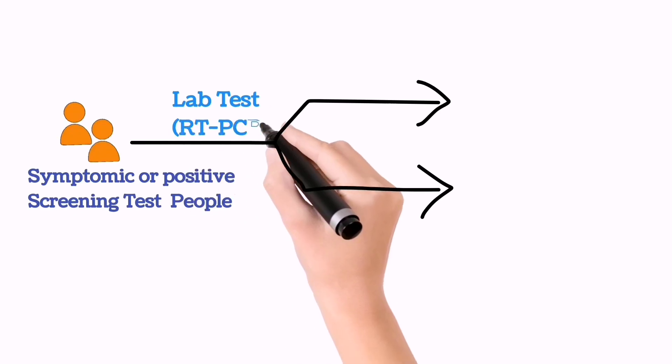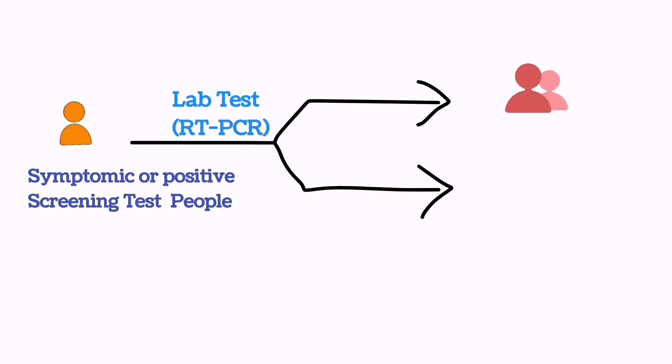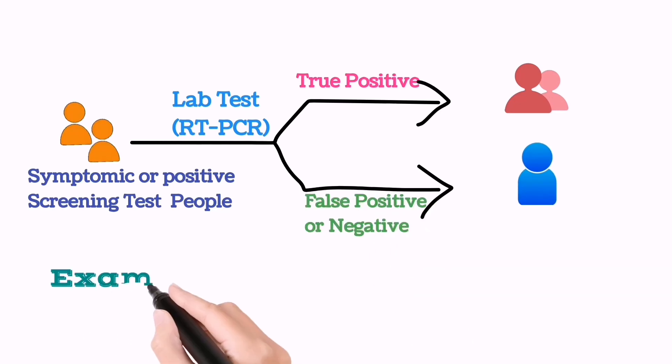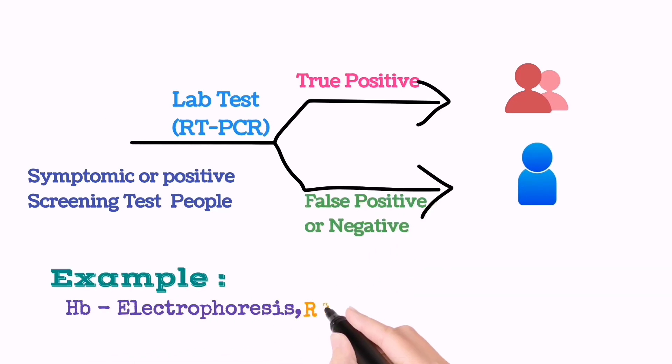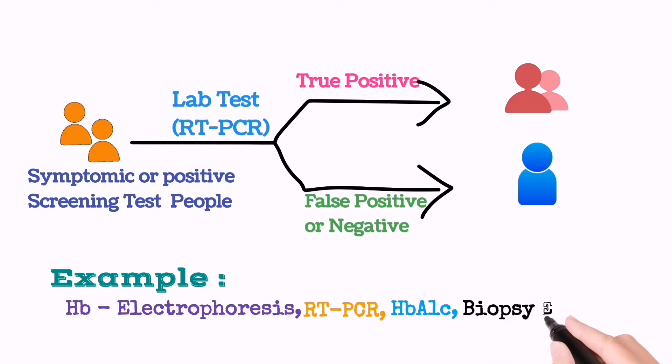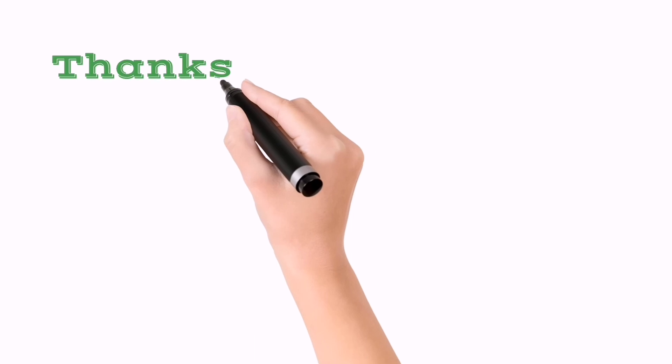So a diagnostic test like RT-PCR for HIV people will be done. It will confirm true positive and false positive. Some good examples of diagnostic test include Hb electrophoresis, RT-PCR, HbA1C, and biopsy, etc.